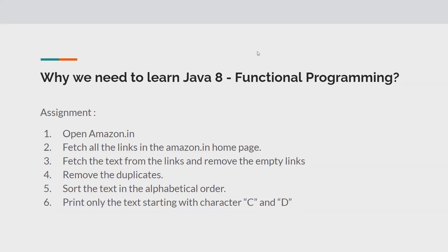Functional programming is not new — it is already there in other languages — but Java adapted it in Java 8. It has certain new functionalities like functional interfaces, streams, the Stream API, method references, constructor references, and lambda expressions. So how can this help us write better code as a test automation engineer?